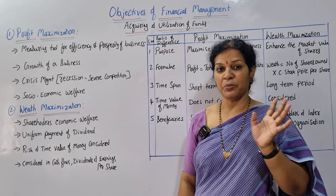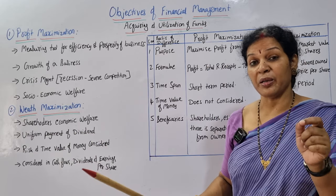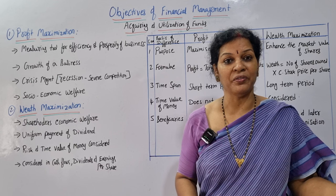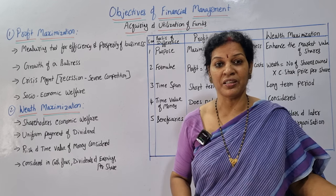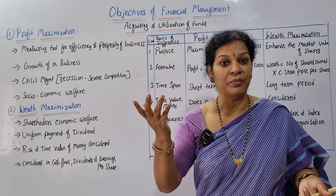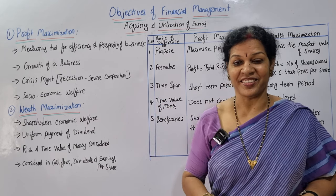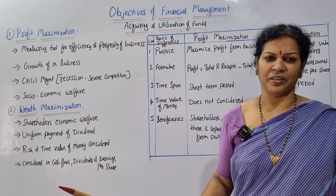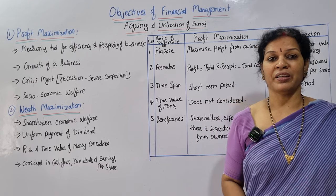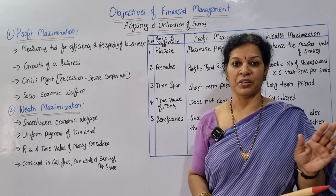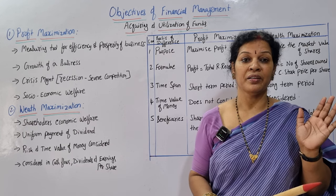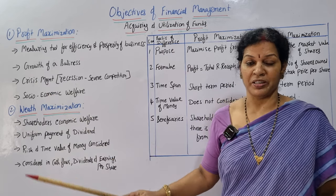Now coming to wealth maximization. The first important point is shareholders' economic welfare. When share value increases, shareholders feel comfortable — they receive dividends and the value of their shares grows. For example, 500 shares at 10 rupees each equals 5,000 rupees; at 20 rupees per share that becomes 10,000 rupees. Second, wealth maximization enables uniform payment of dividend, maintaining uniformity with no discrimination.